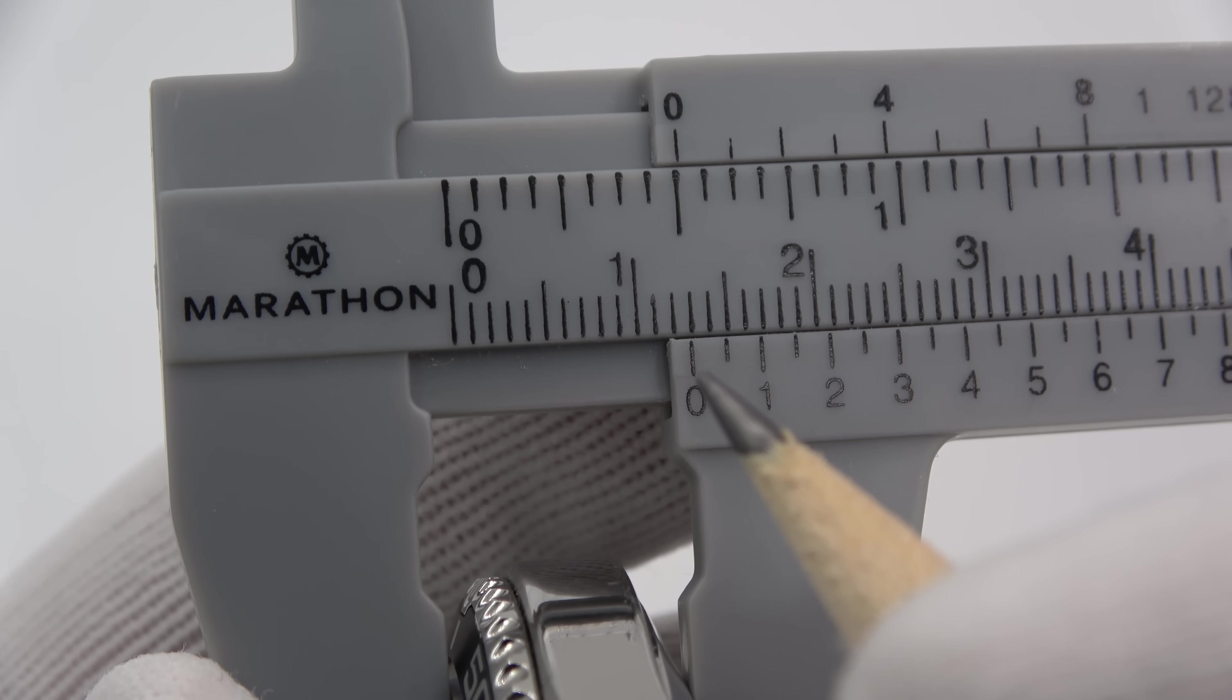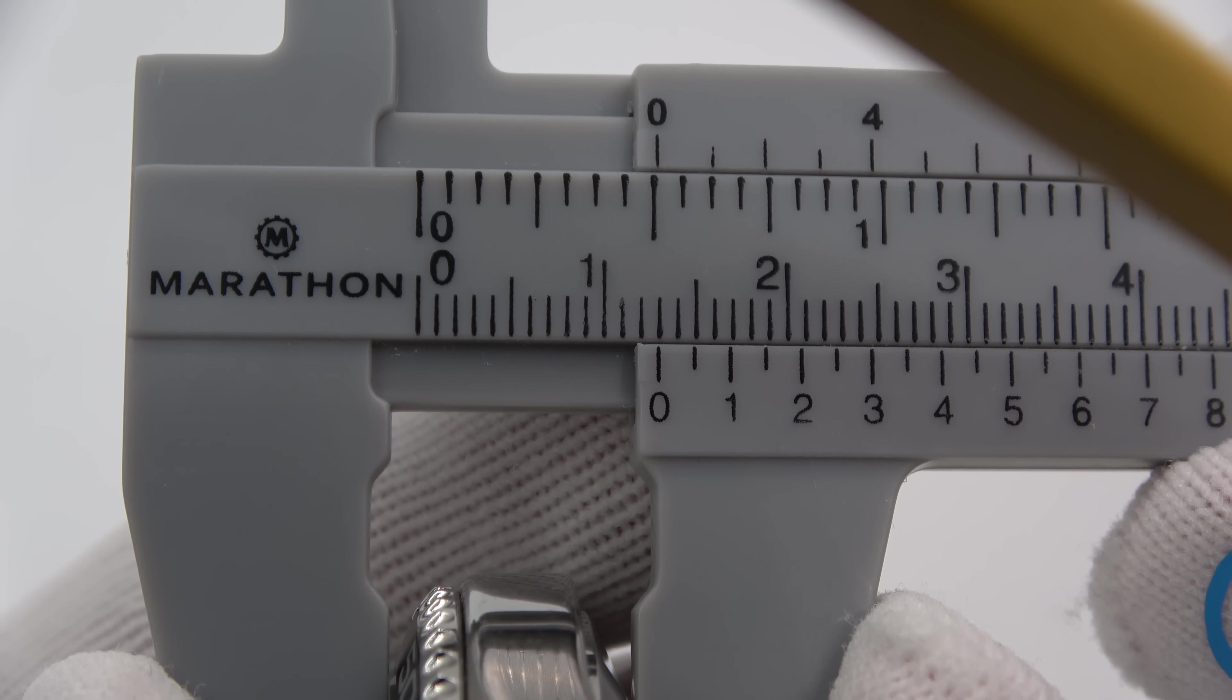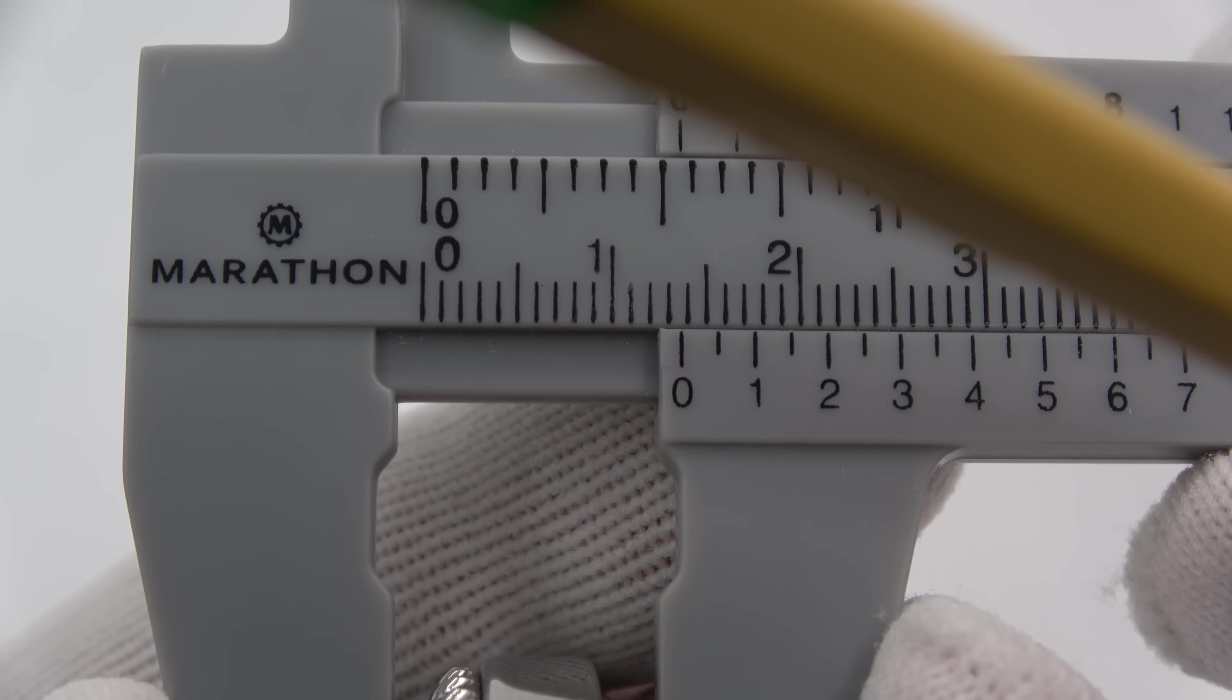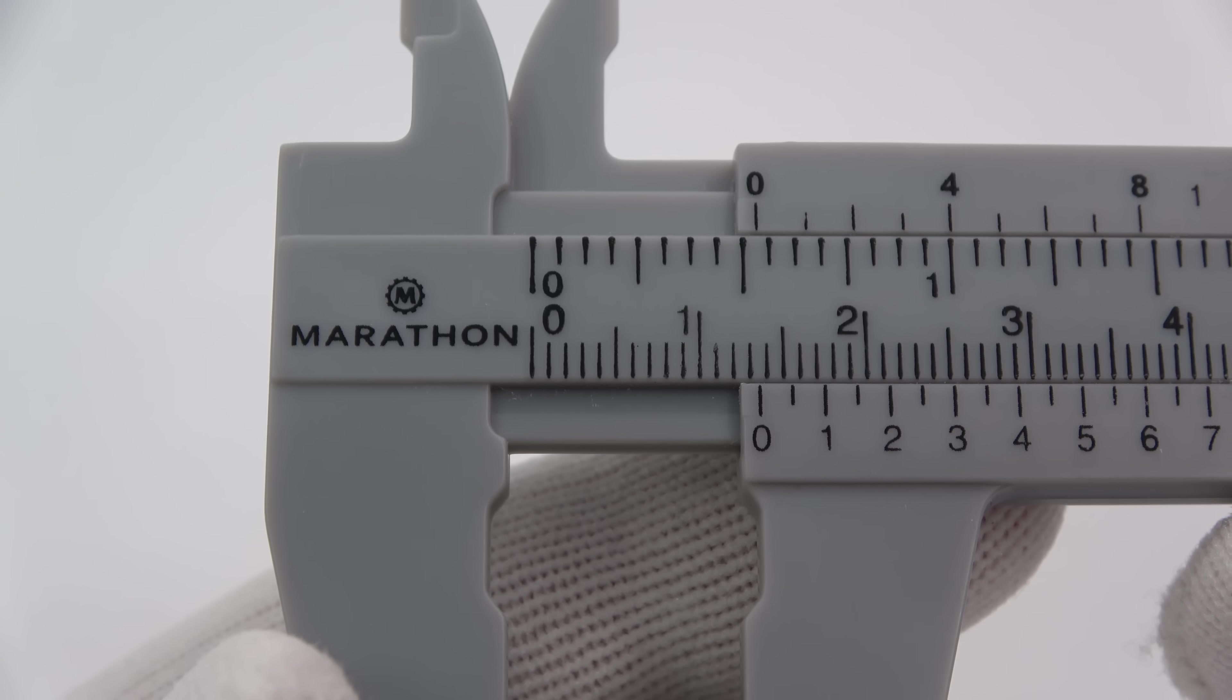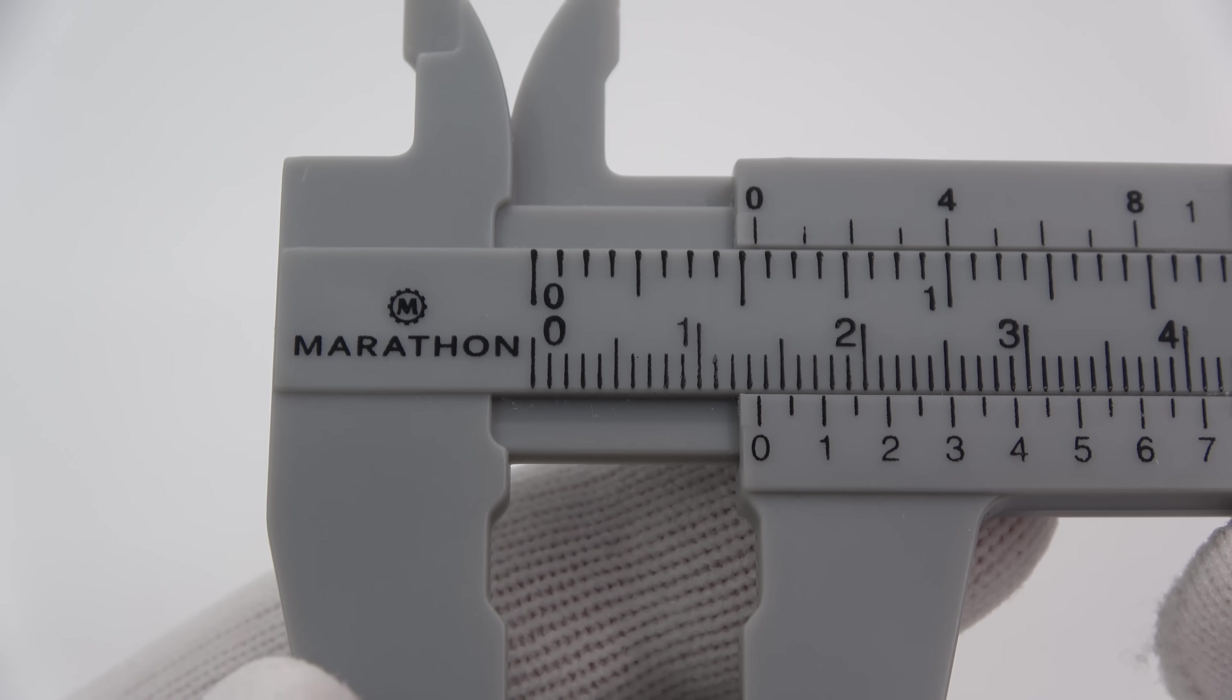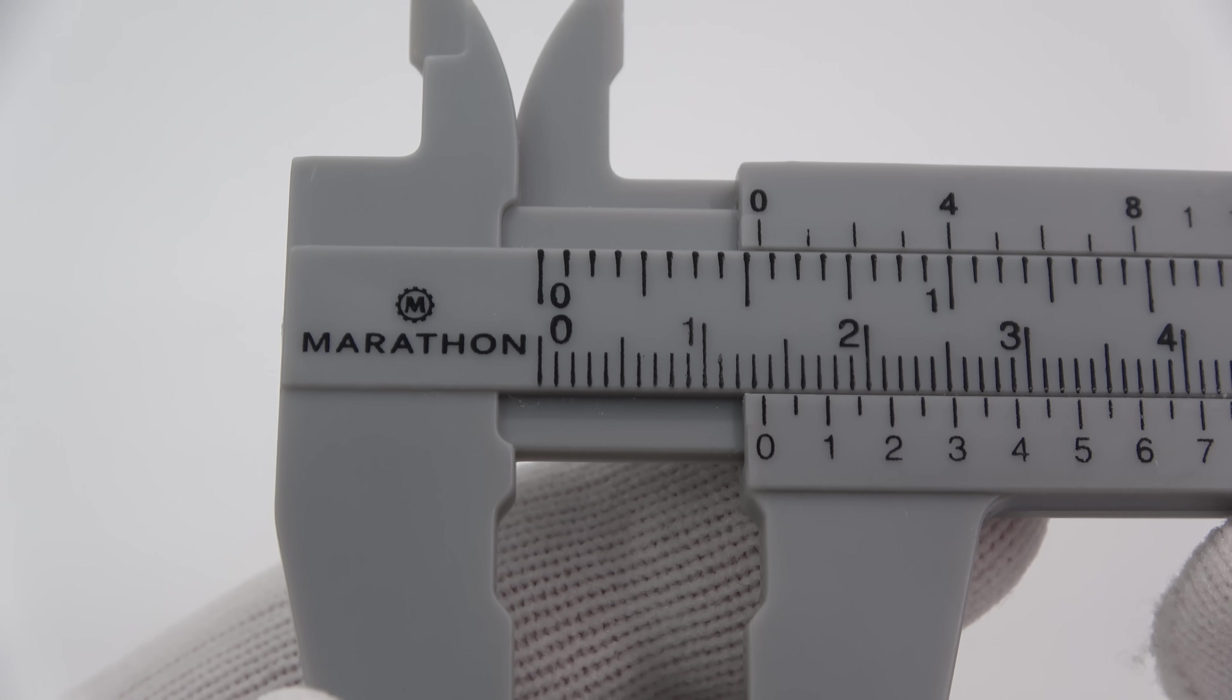For most measurements you can just interpolate. Like let's say I measured the case and it came out to be like that. You could say, okay, it's like 13 and a half millimeters. And again, for what we're doing here, measuring lugs and thicknesses and diameters, that's fine. I don't need any more accuracy than that. But I can, and that's where the vernier scale comes into play.